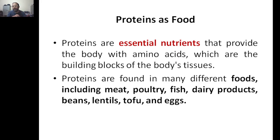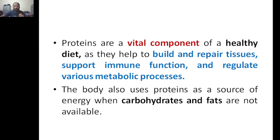Other functions include providing mechanical support and regulating cell behavior. Proteins as food are essential nutrients that provide the body with amino acids, which are the building blocks of the body's tissues. Proteins are found in many foods: meat, poultry, fish, dairy products, beans, lentils, tofu, and eggs — all are forms of protein.